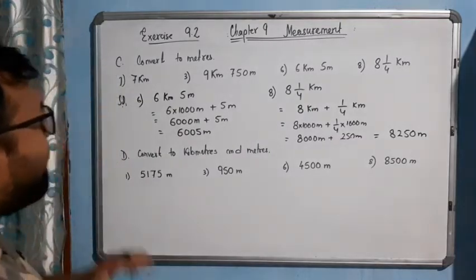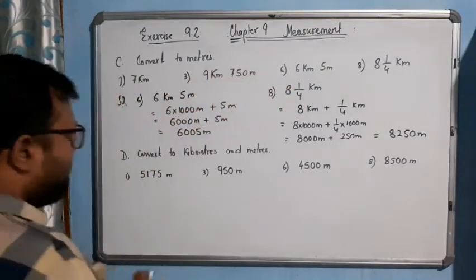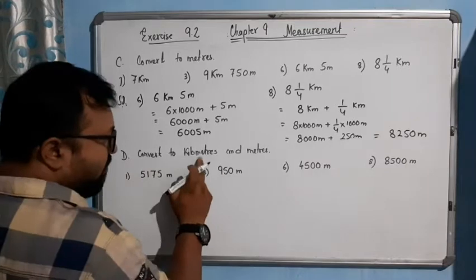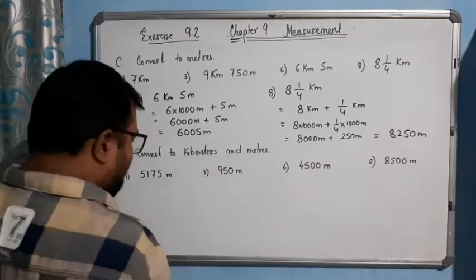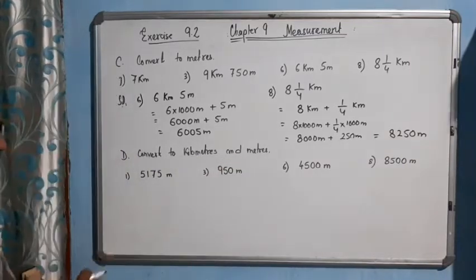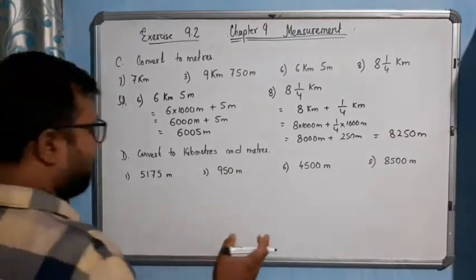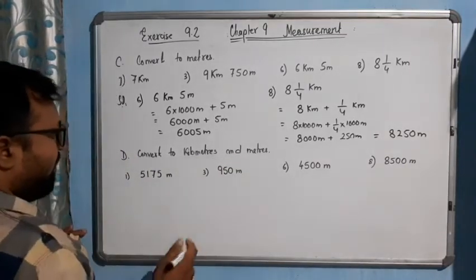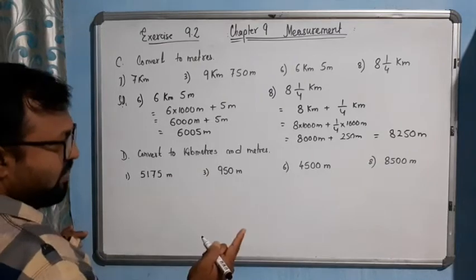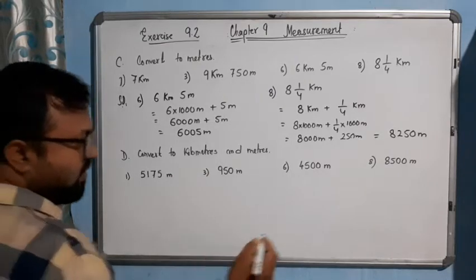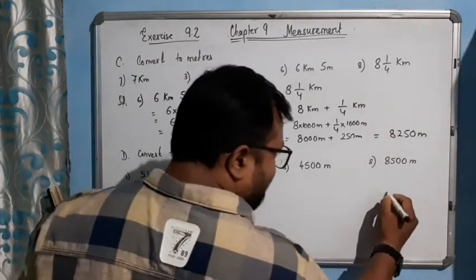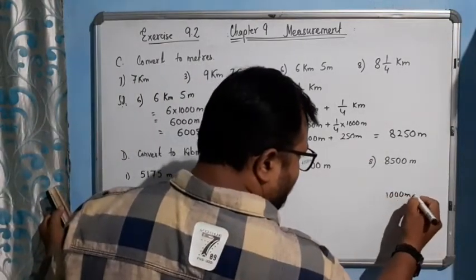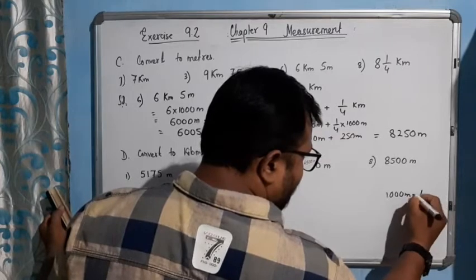I hope you have understood this part. Now, the next section: Convert to kilometers and meters. We know that 1000 meters equals 1 kilometer.